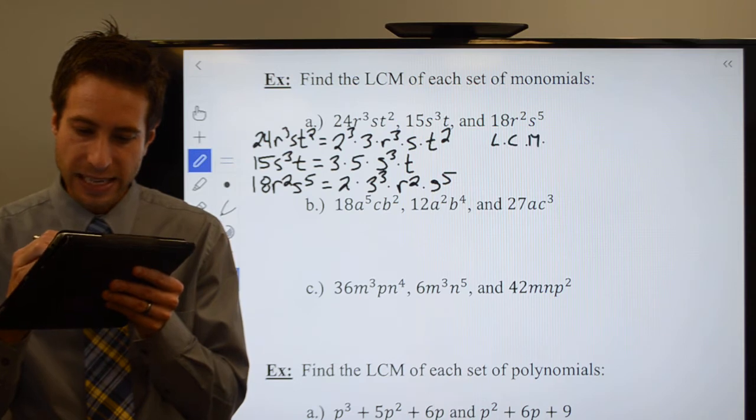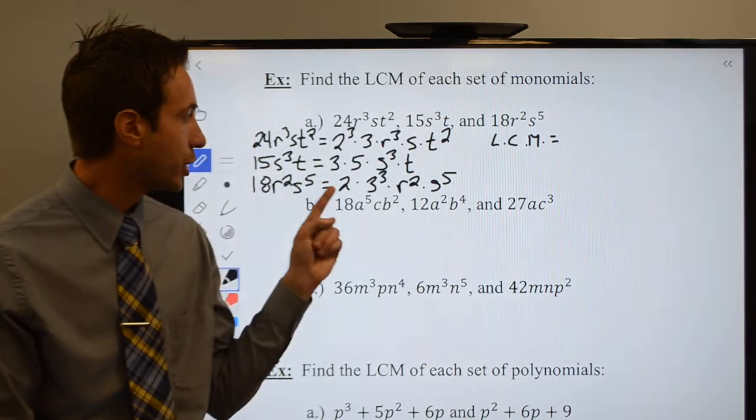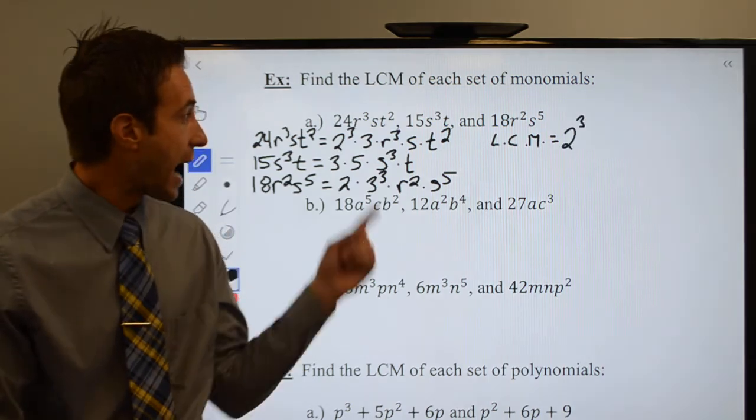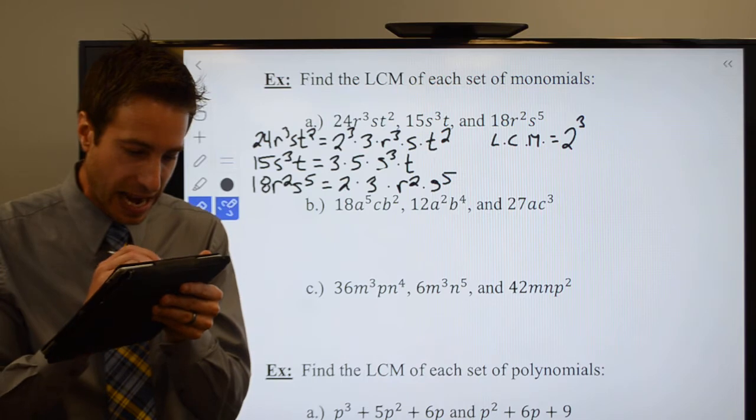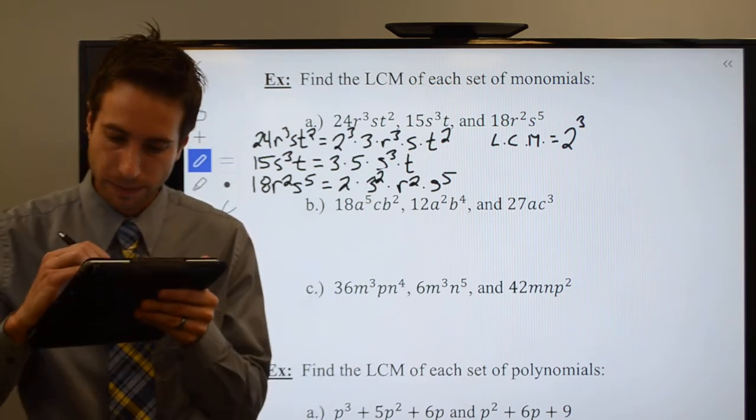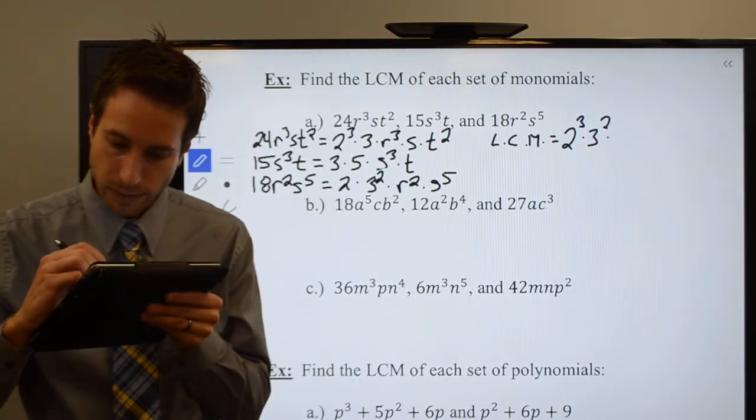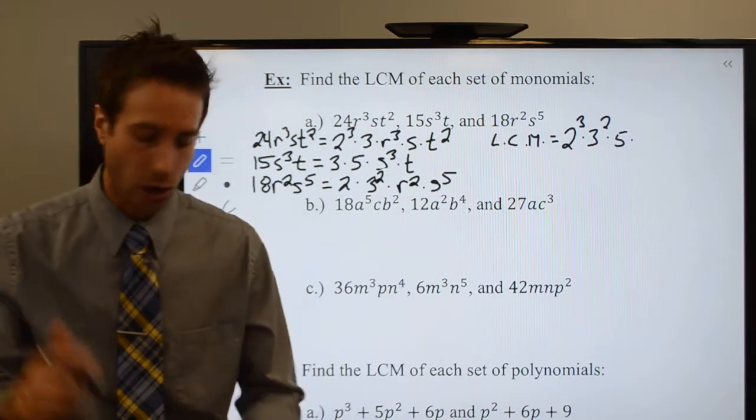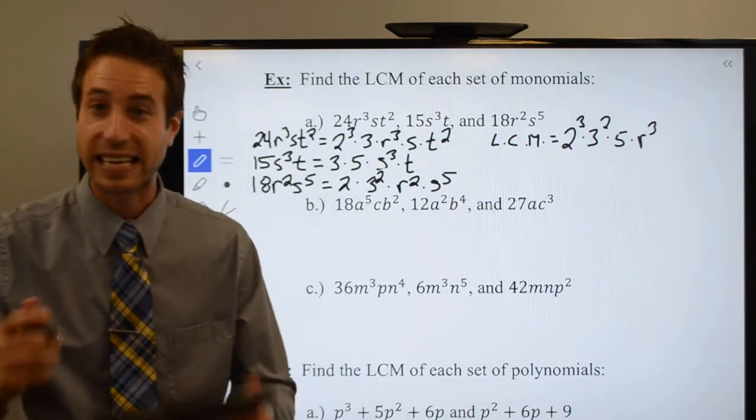Alright, so my LCM is each factor the greatest number of times that it appears. I have a 2³ and a 2 to the first, so I keep the 2³. I have a 3 to the first and a 3 squared. I apologize, I wrote a 3³, it's not. That should be a 9, it's a 3². My bad. So I have a 3 to the first and 3², I keep the 3². 5 only shows up once. Now I keep the variables the greatest number of times it appears. R³, r², I keep the r³. I have an s to the first, s to the third, s to the fifth, I keep the s to the fifth.